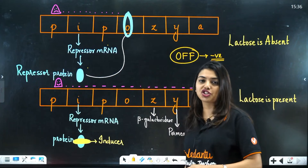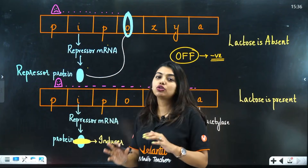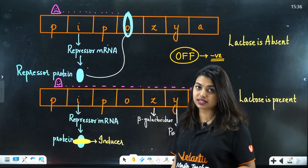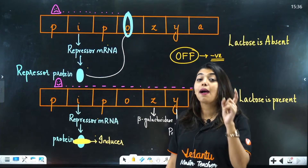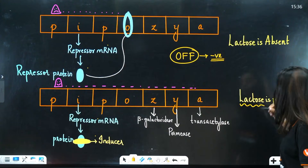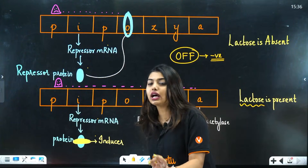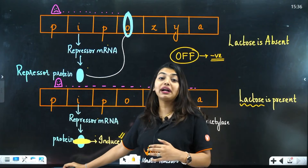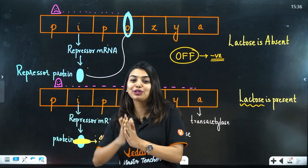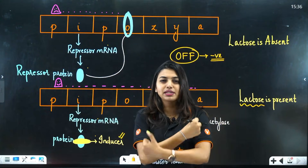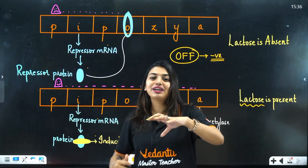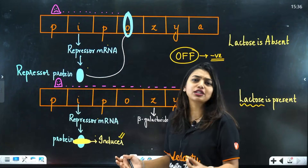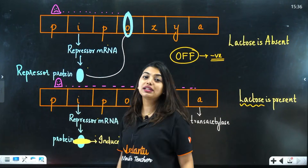How do we switch the gene on? When glucose is low and lactose is present in the surrounding, the I gene still forms repressor mRNA and repressor protein — but here, lactose acts as a hero. Lactose acts as an inducer and goes and binds with the repressor protein, preventing the repressor from binding with the operator. Like a big person hugging you and not letting you move — the inducer holds the repressor back.